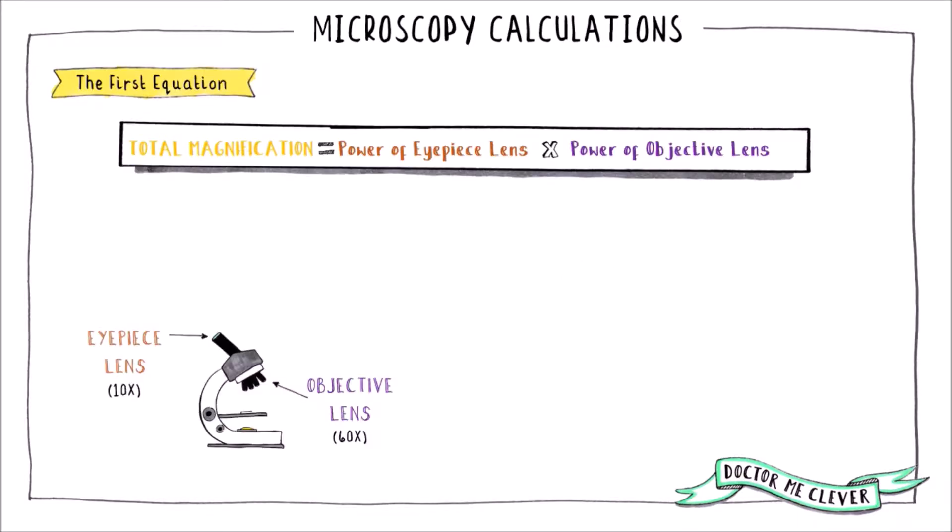The first equation requires the magnifying power of both the eyepiece and objective lenses. When these two values are multiplied together you get the total magnification.